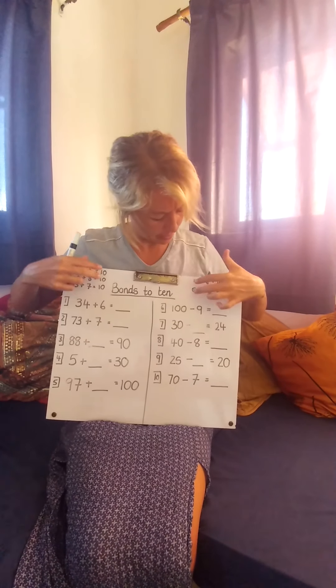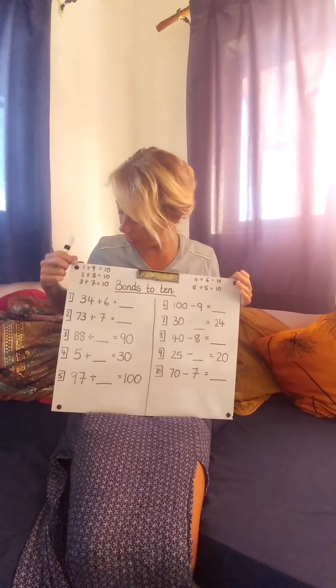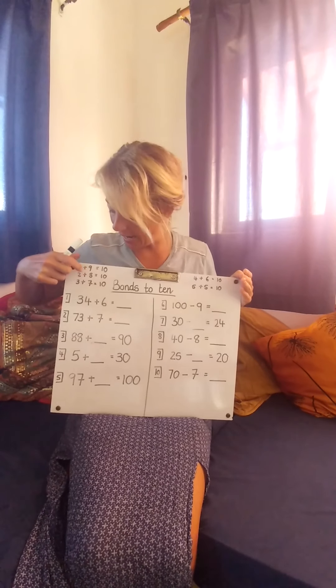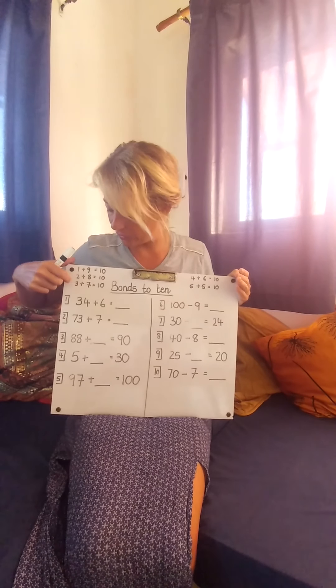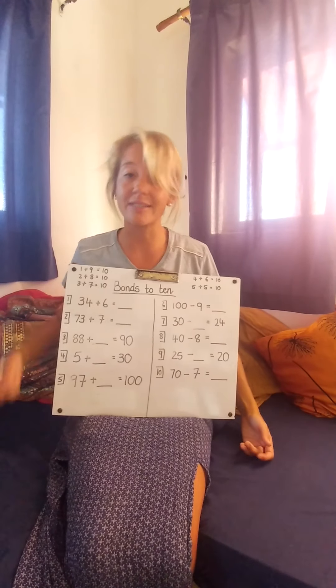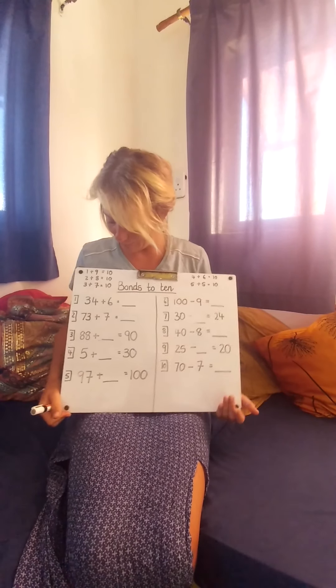So at the top here, I've written the options we have of putting them together. So when we have a 9, we use a 1 to get to 10, an 8 uses a 2, a 7 uses a 3, a 5 and a 5, and a 4 and a 6. So when we have any one of those numbers, we know what the other number has to be.